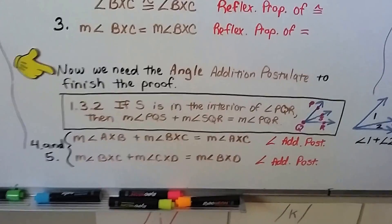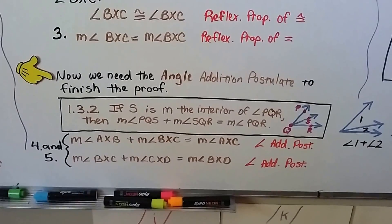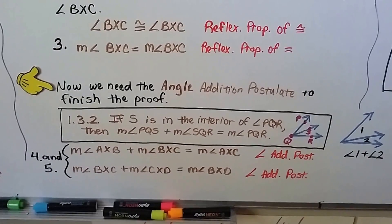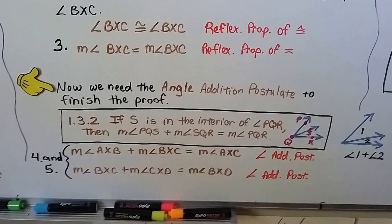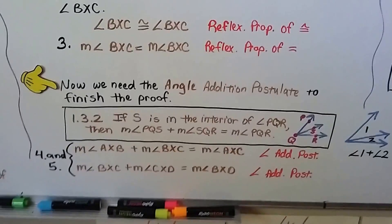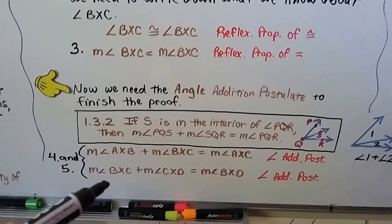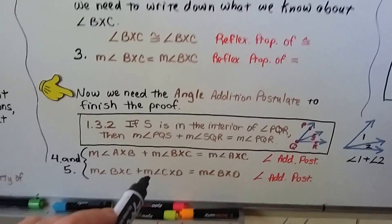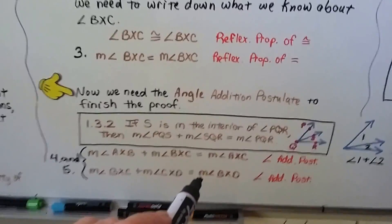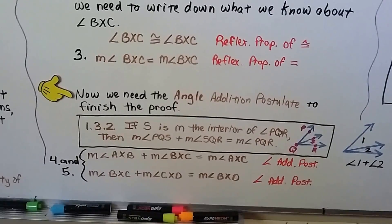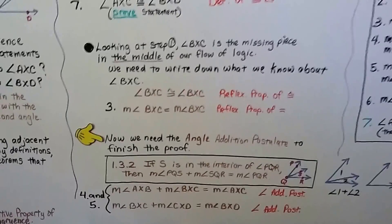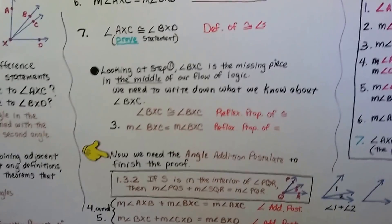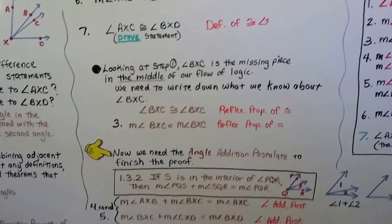So now we have numbers 4 and 5 for our two column proof. We've got the measure of angle AXB plus the measure of angle BXC is equal to the measure of angle AXC. That's the angle addition postulate. And we've got the measure of angle BXC, that's the little angle in the center, plus the measure of angle CXD is going to equal the measure of angle BXD. I know it's hard because of all these letters, but if you can look at the picture as you're doing this, it'll make more sense.